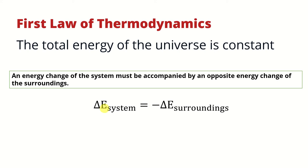In other words, if the system has an energy increase, the surroundings must have an energy decrease — opposite directions: one increases, one decreases. If the system increases, the surroundings decrease. Same amount of energy, opposite direction.